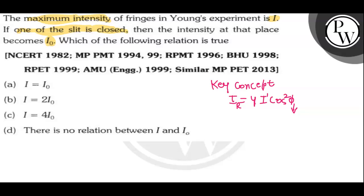Here it is mentioning maximum intensity. For maximum intensity, the value of φ is equal to 0, and cos 0 is equal to 1. So the value of I_R would be equal to 4I'.